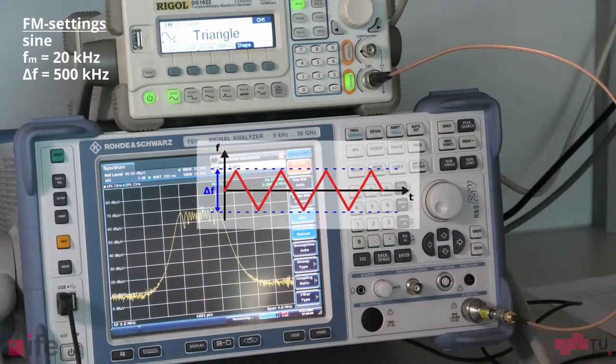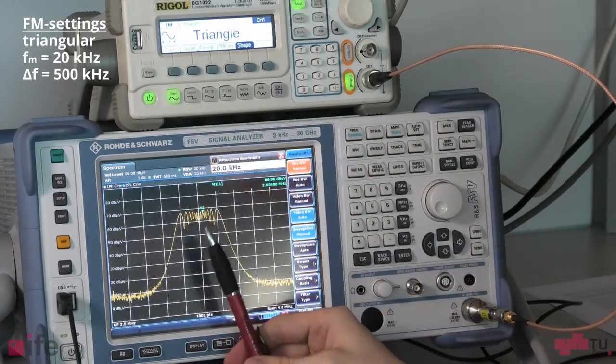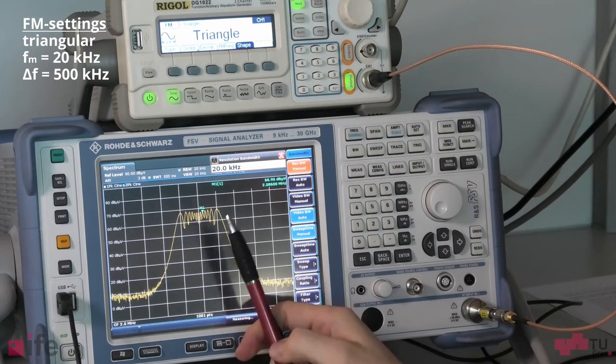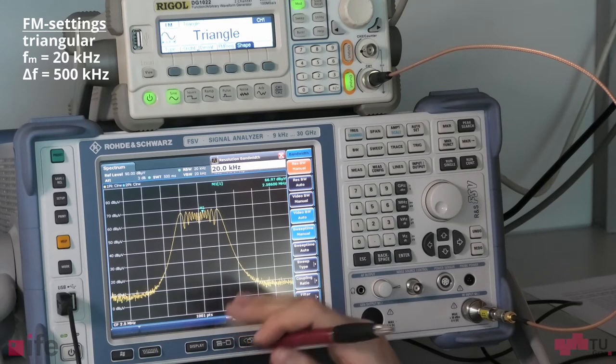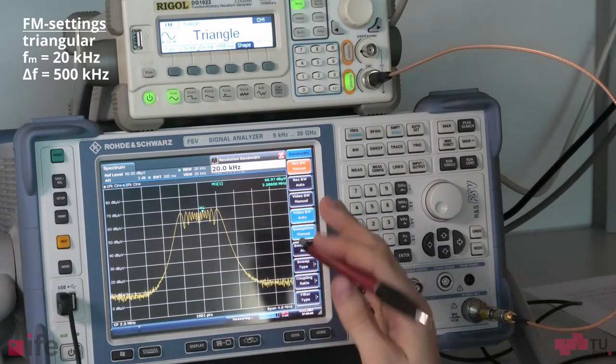Now let's try a triangular wave, and we can see the spectrum is even better than with the sine wave. Now there are still those tiny peaks extending, but overall it's really extremely flat.